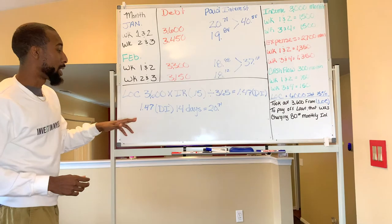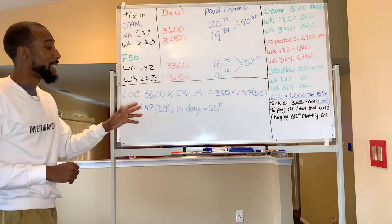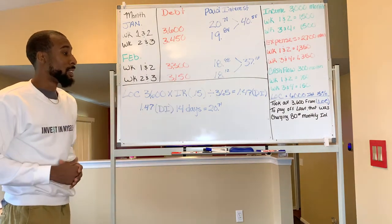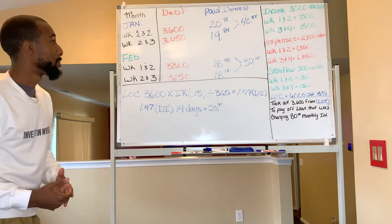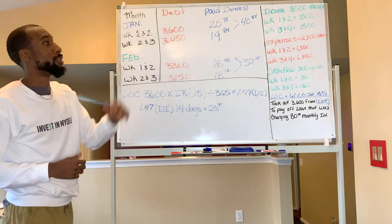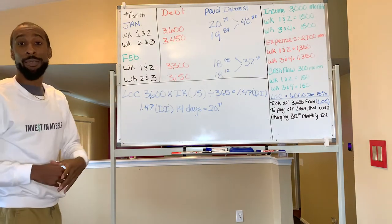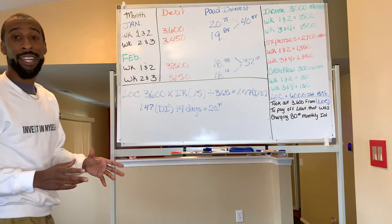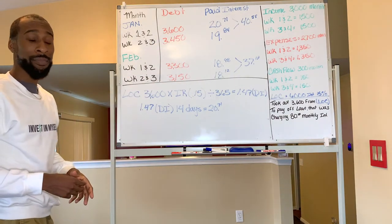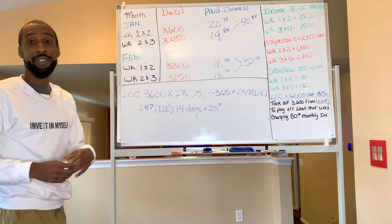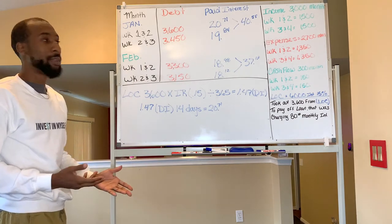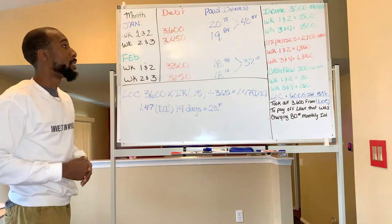Now we take that $1.47 daily interest times 14 days, and we get interest of $20.71. So for week one and two, the debt was $3,600 and we paid $20.71 in interest. Now when that paycheck drops, he's going to put $1,500 onto the line of credit, then draw $1,350 out to pay for expenses. This leaves the individual with a balance of $3,450.